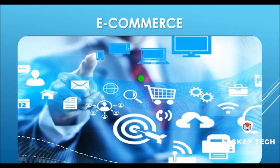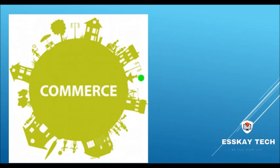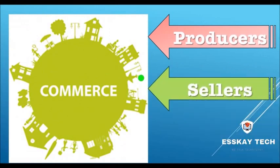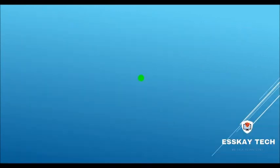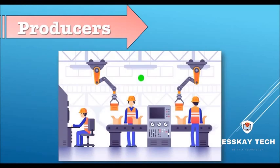You can see commerce all around — it may take different forms. In commerce, there are basically three groups of people involved: number one, producers; the sellers; and the buyers. The first group, the producers, are who produce different kinds of products or items and provide services.